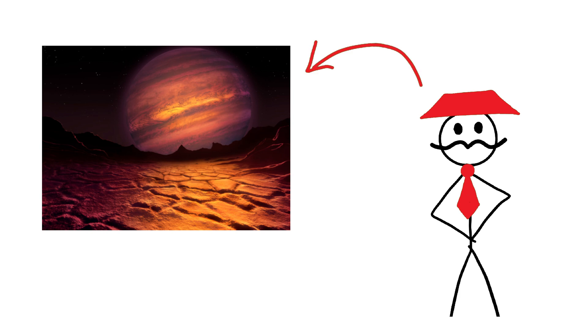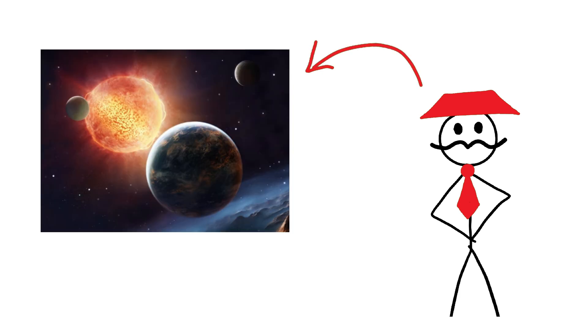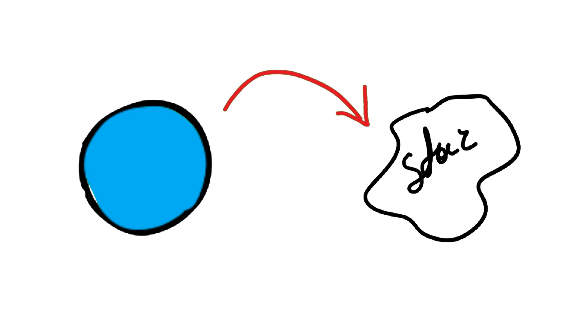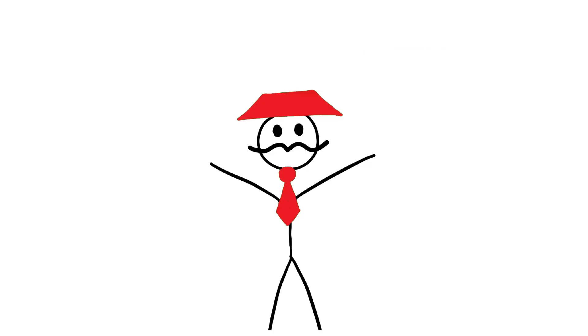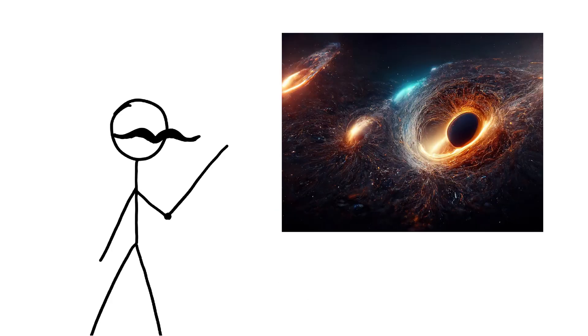Brown dwarfs are important to astronomers because they bridge the gap between planets and stars, helping us understand how objects form and evolve in space. They also provide insights into the distribution of mass in the universe and contribute to our understanding of stellar evolution and formation processes.